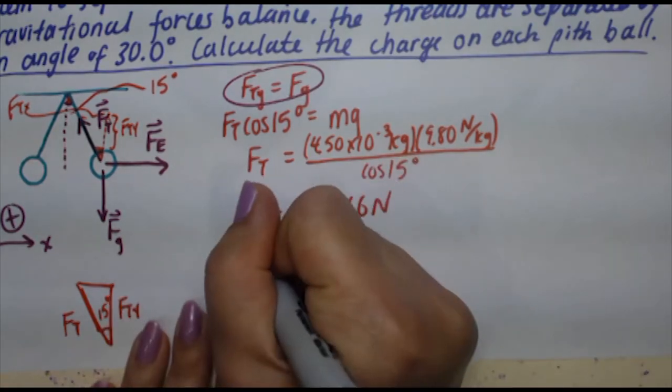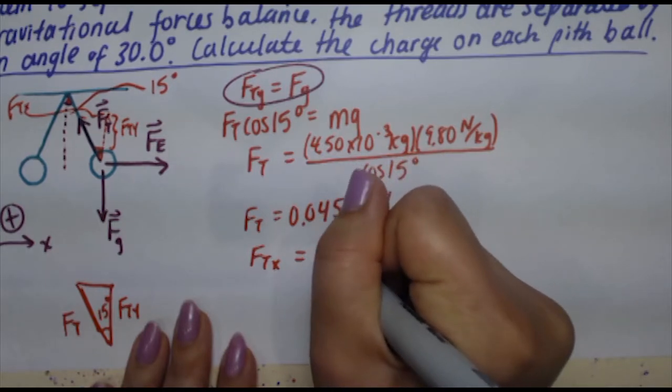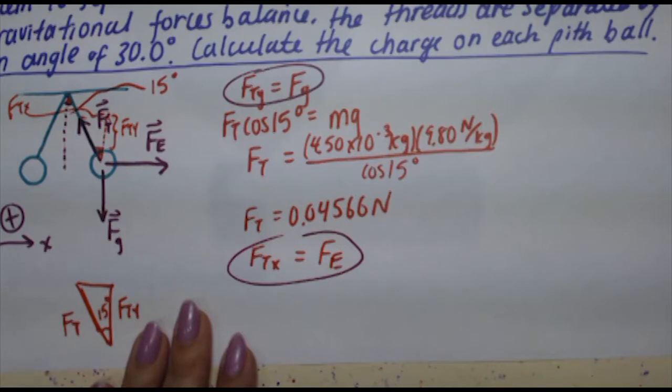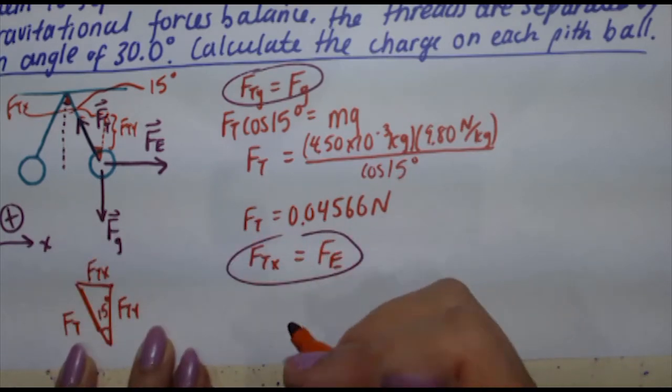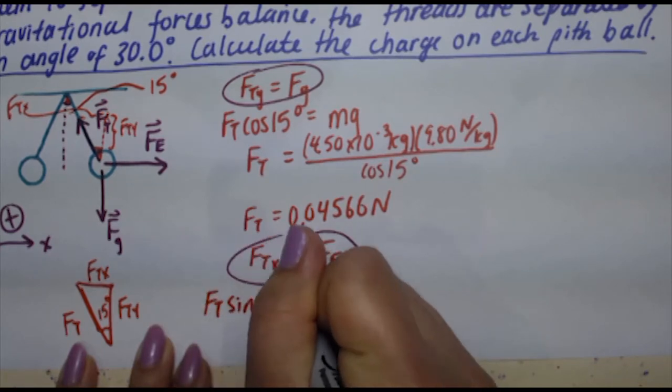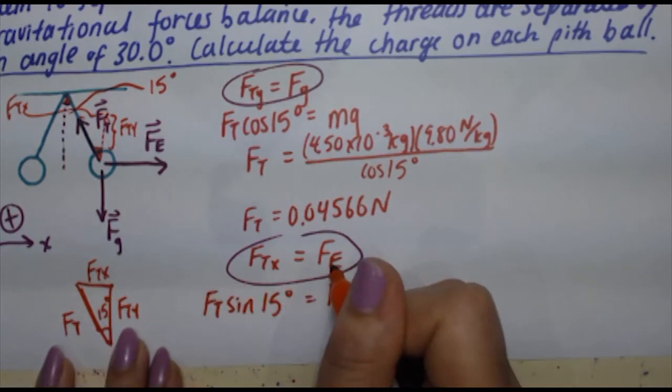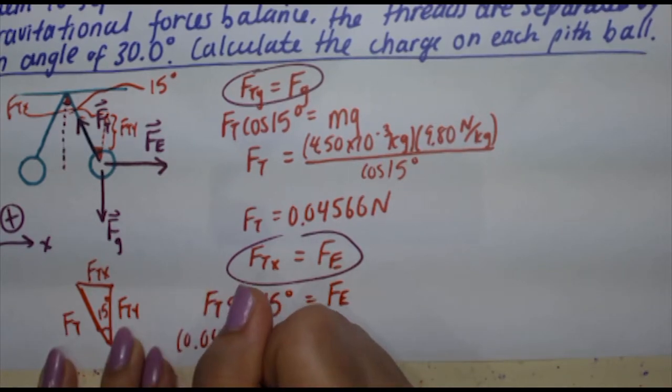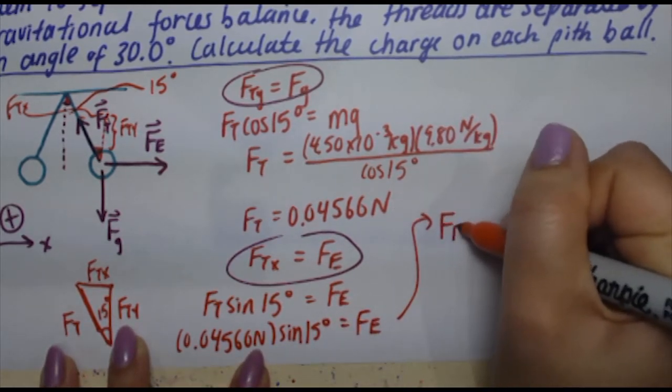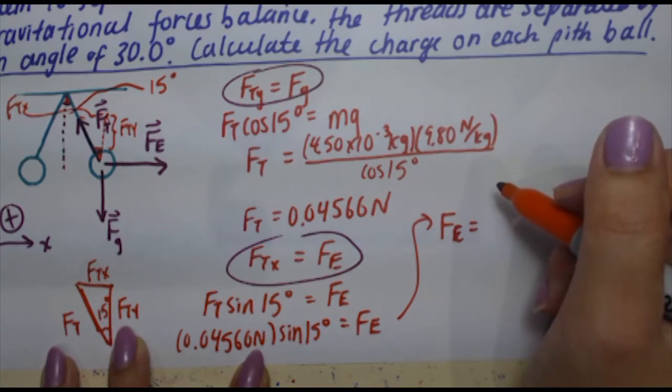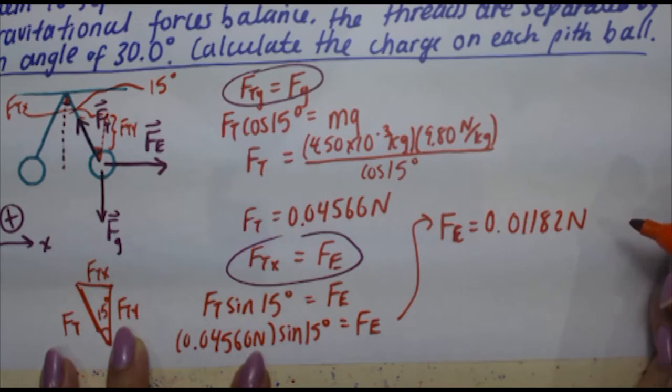So this was our first step, setting FTY equal to FG. We found our force of tension. Now we are going to use force of tension and say that my force of tension in the x direction is going to be equal to my electric force. So FTX is equal to FE. FTX is going to be this side of the triangle, that's simply FT times the sine of 15 degrees. So FT sine of 15 degrees equals FE. FT is 0.04566 newtons times sine of 15 degrees equals FE. So if we punch it in our calculator, you're going to get FE equal to 0.01182 newtons.